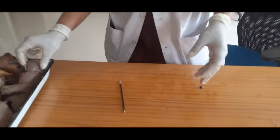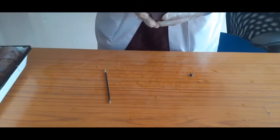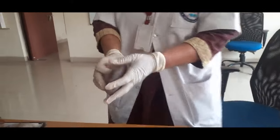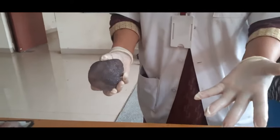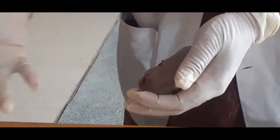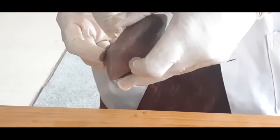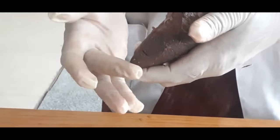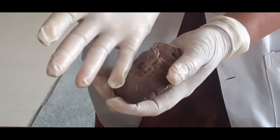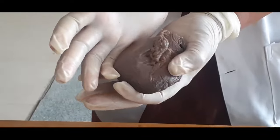Now coming to another viscera — this is the spleen. It lies in the left hypochondrium. It has got two surfaces: the costal surface facing towards the ribs and the visceral surface facing towards the viscera. It has two ends — anterior and posterior — and three borders: the superior border, intermediate border, and the inferior border.